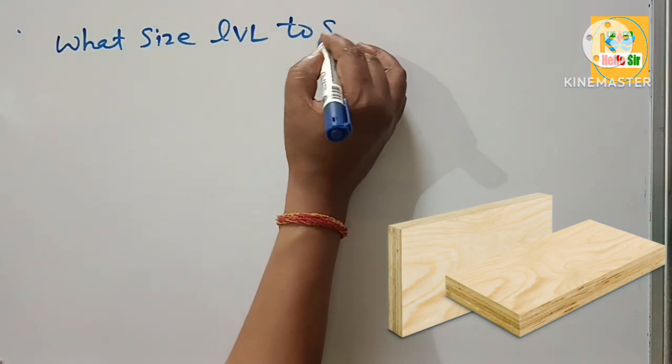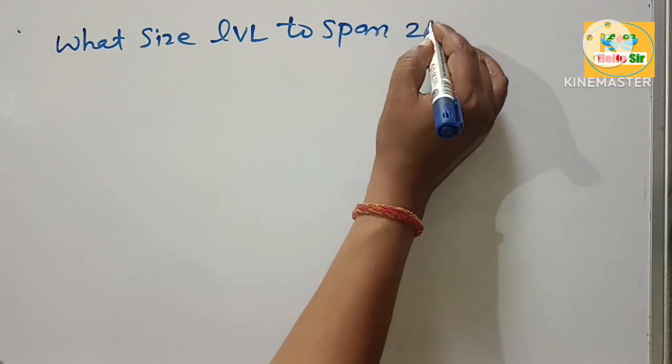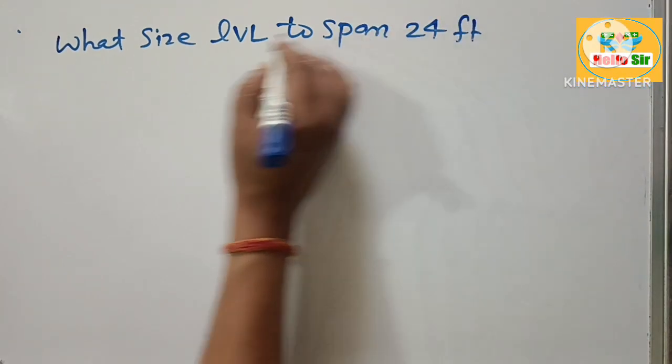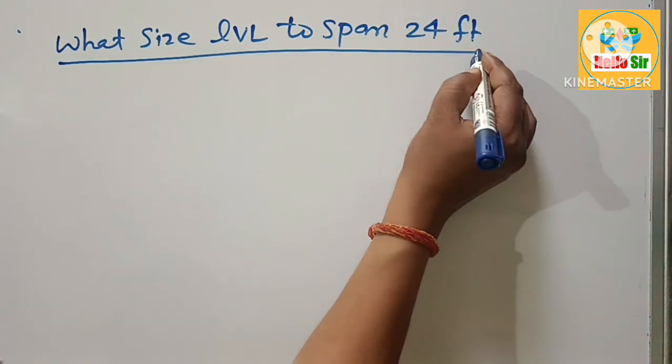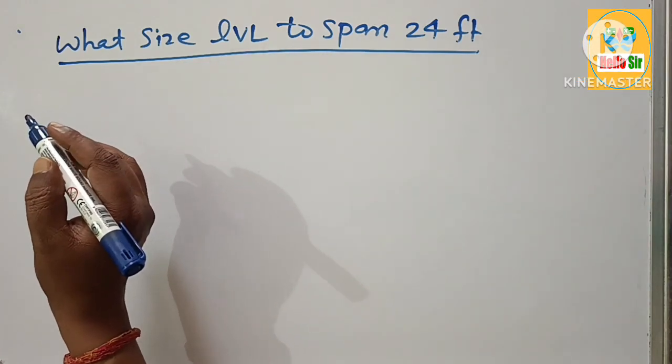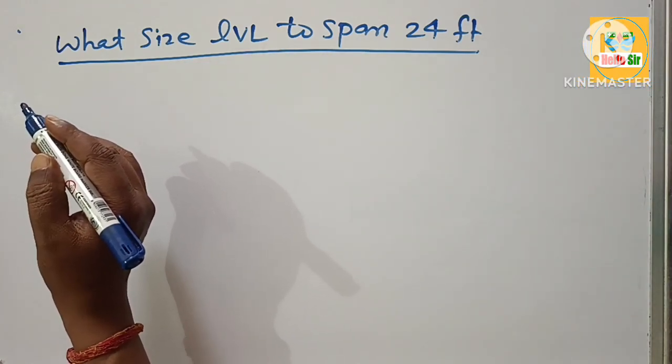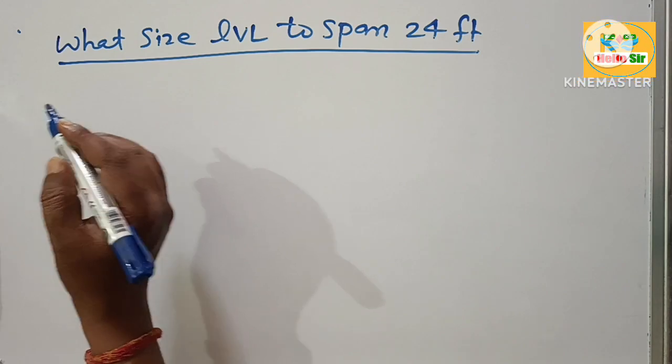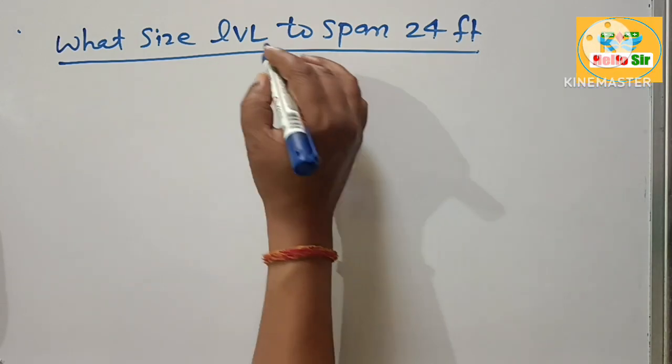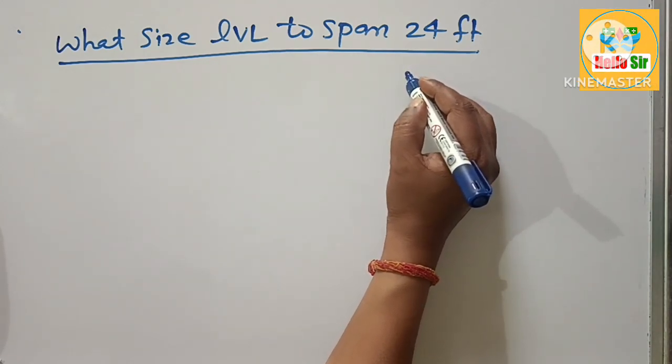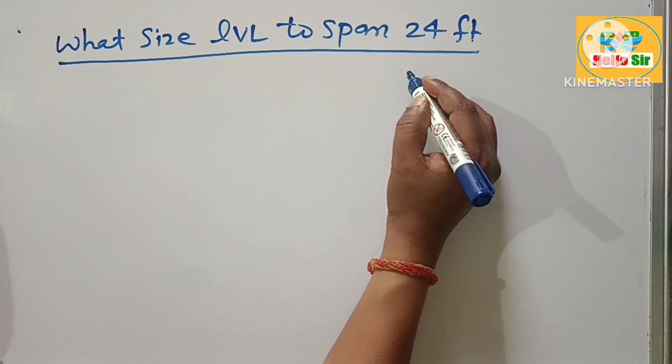What size LVL beam is needed to span 24 feet? You have to find out the correct LVL beam size. LVL is an engineered wood product made of multiple layers of thin sheets of wood assembled together.